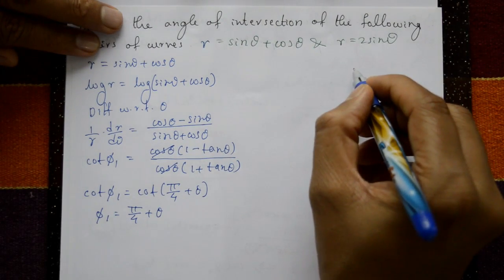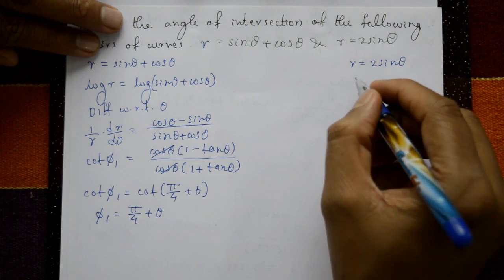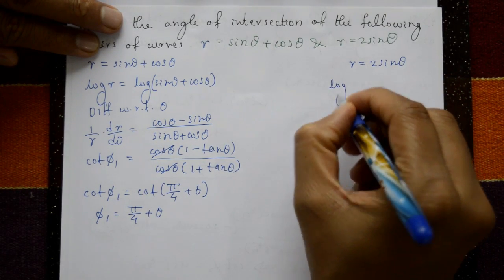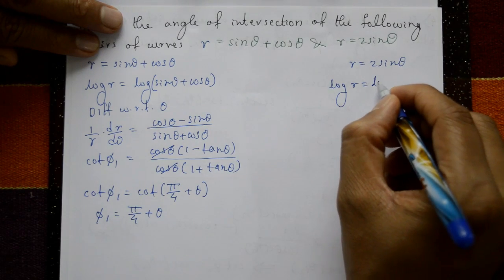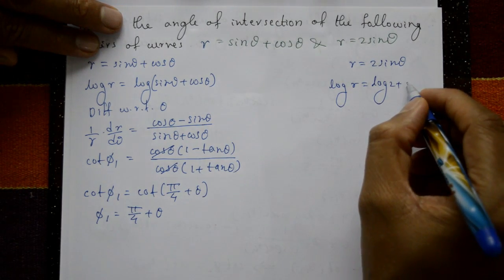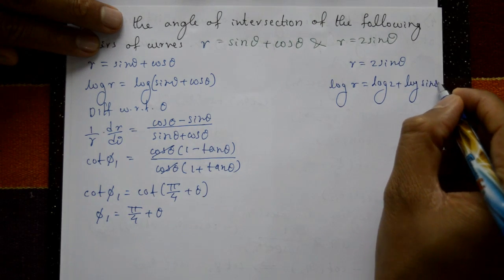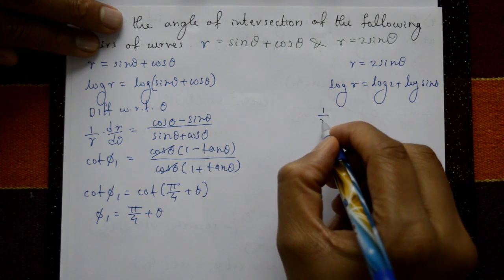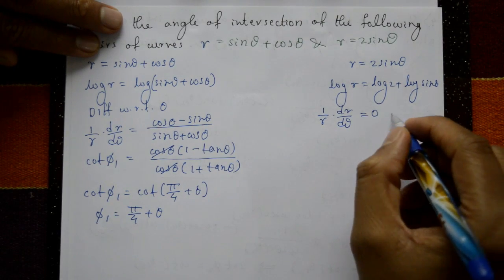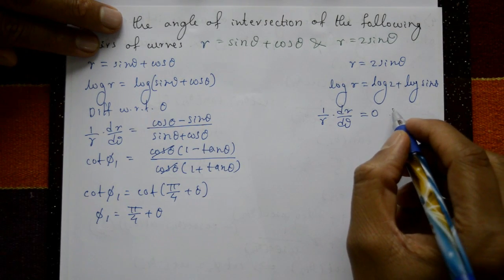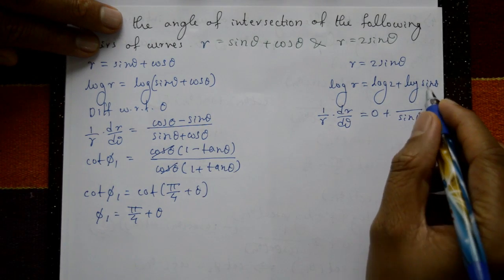For the second curve r = 2sinθ, taking log on both sides: log r = log 2 + log sinθ. Differentiating with respect to θ: (1/r)(dr/dθ) = 0 + (1/sinθ)·cosθ.